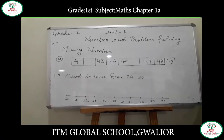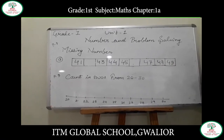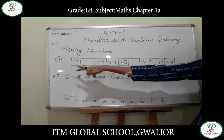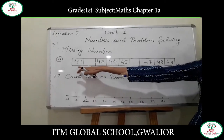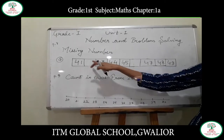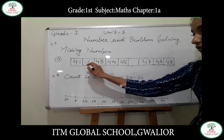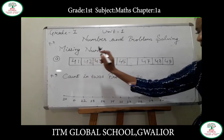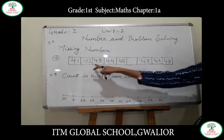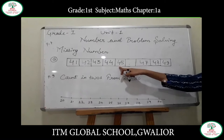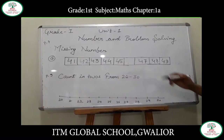We simply use forward counting. After 41, we need to tell what comes next — so after 41 there is 42. Then 43 is already here, 44 is here, 45 is here.